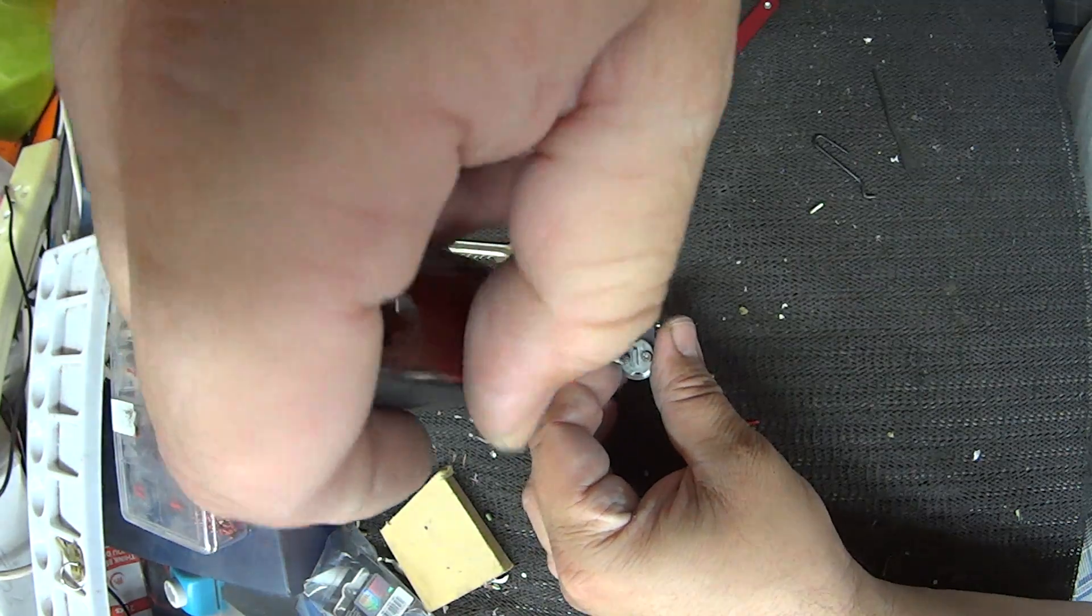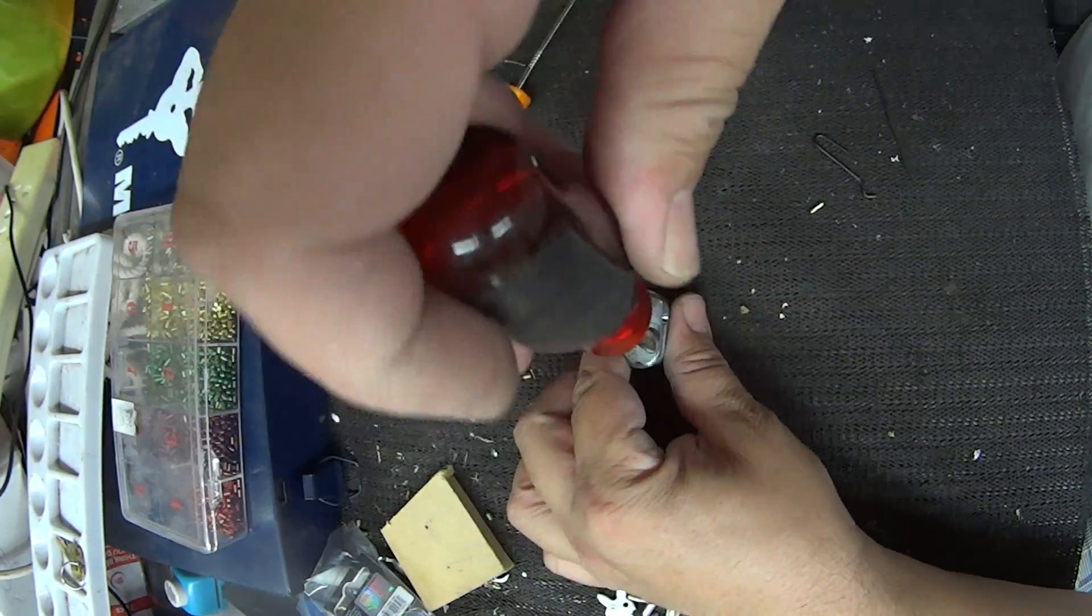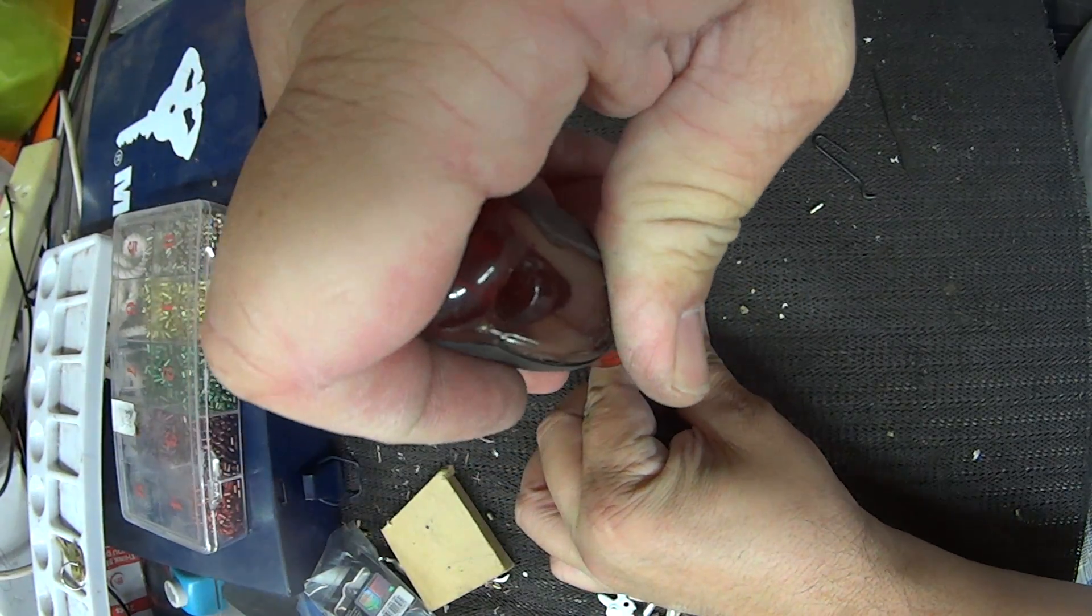Now be careful—you do not want to break these screws off, otherwise you'll be up for a new cylinder. But they must be tight. Some people put a little bit of Loctite on them.